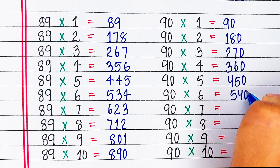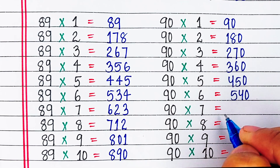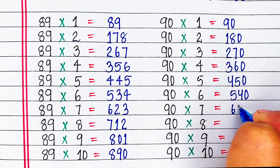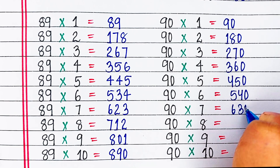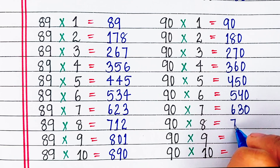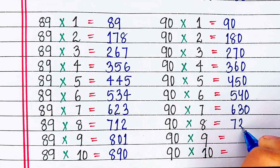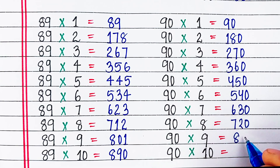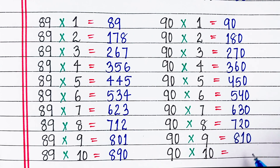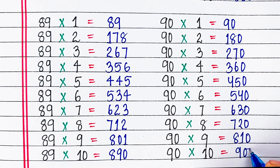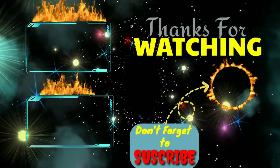90 6s are 540, 90 7s are 630, 90 8s are 720, 90 9s are 810, 90 10s are 900.